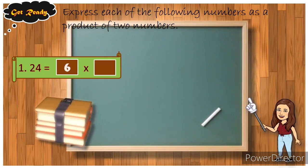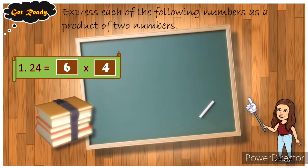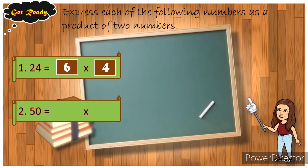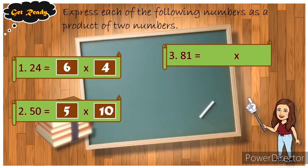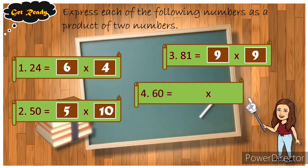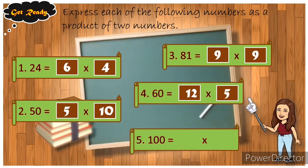Very good, it's six and four. Number two: fifty. Absolutely, it's five and ten. Number three: eighty-one. Great, it's nine and nine. Number four: sixty. Very good, it's twelve and five. Last but not the least: one hundred. Excellent, it's ten and ten.